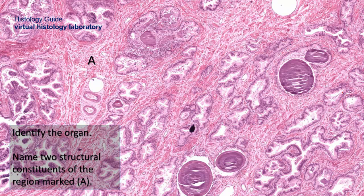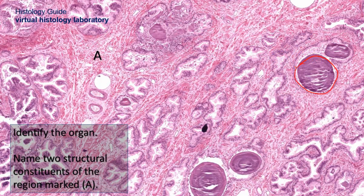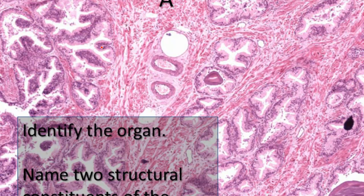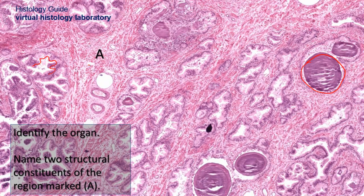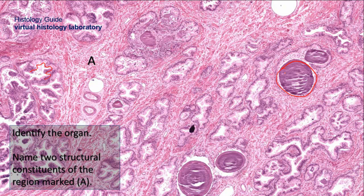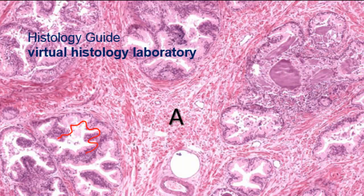Identify the organ and name two structural constituents of the region marked A. A very characteristic feature of this organ is these laminated structures — laminated glycoprotein masses called corpora amylacea. They increase with increasing age and represent secretory products of the glands. You can see many of these tubulo-alveolar glands surrounded by stroma. These corpora amylacea are called prostatic concretions; they calcify and increase with old age. They are a very characteristic feature of the prostate gland.